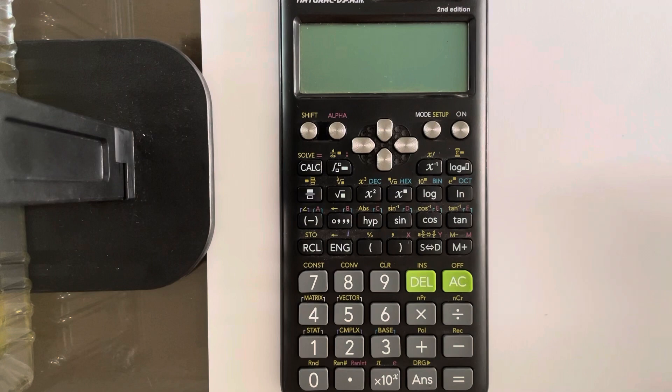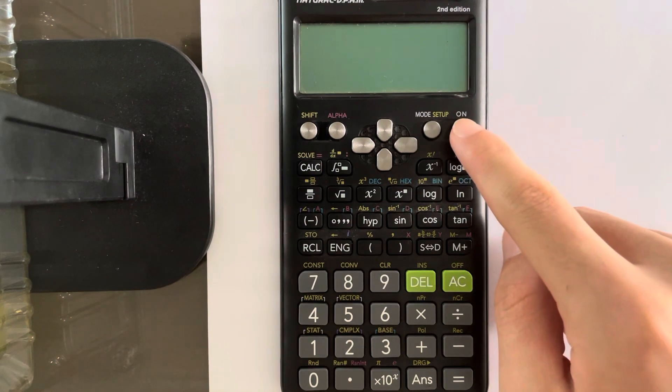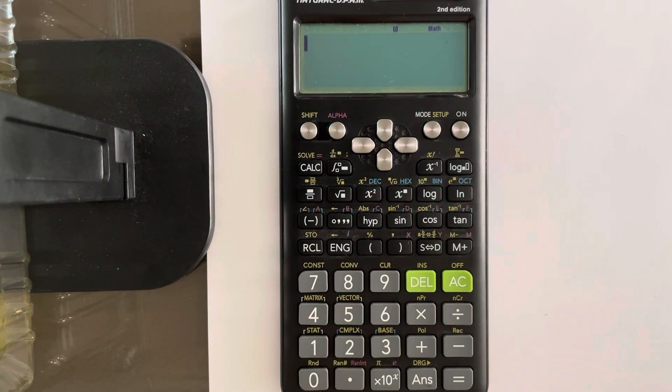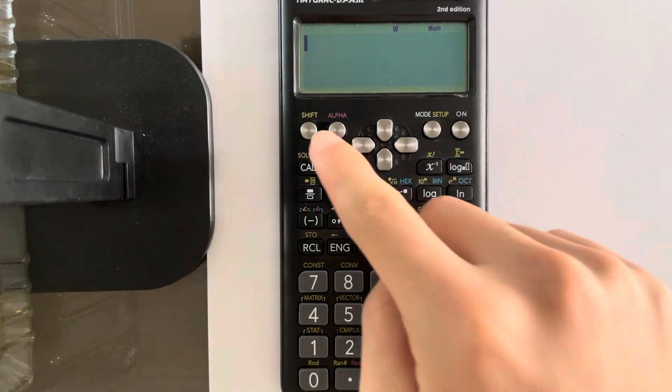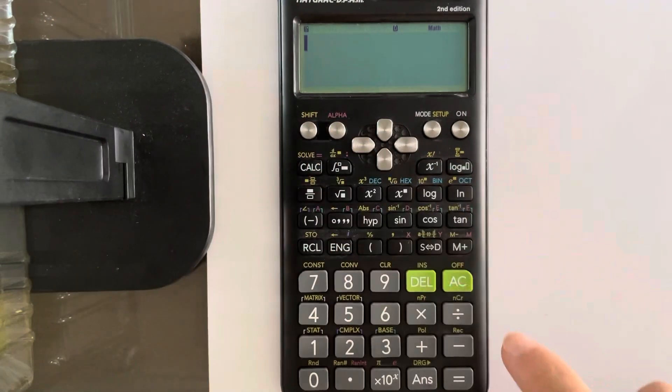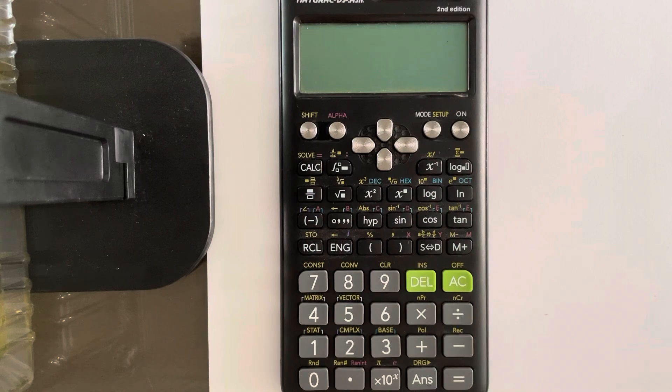First of all, you probably all know how to turn your calculator on. Top right button, it says on. That turns it on. How do you turn it off though? When you press this, it doesn't turn it off. Top left, you see the shift function? You press this and you press AC. That turns your calculator off.